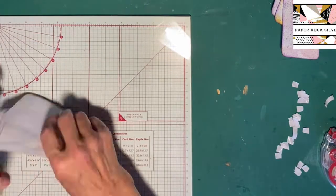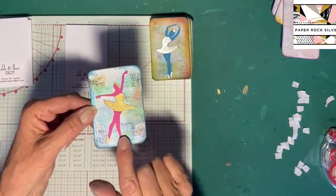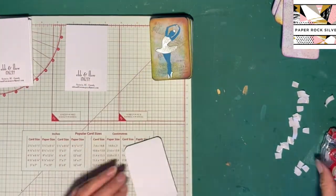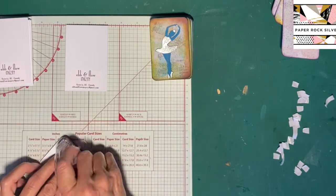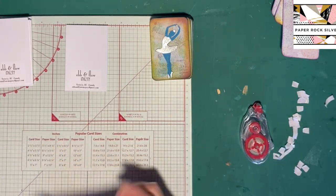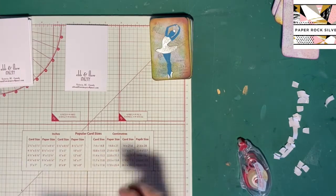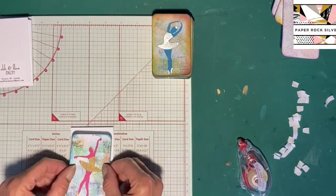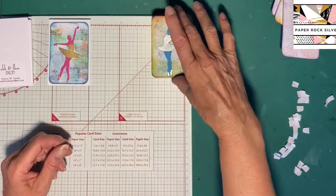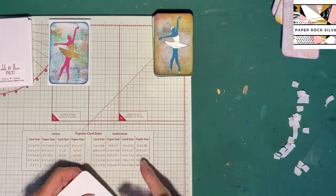I have already had the embossing powder heated up and put on and I've glued them all directly onto the card front and now I'm putting them onto the card that's finished in the background.